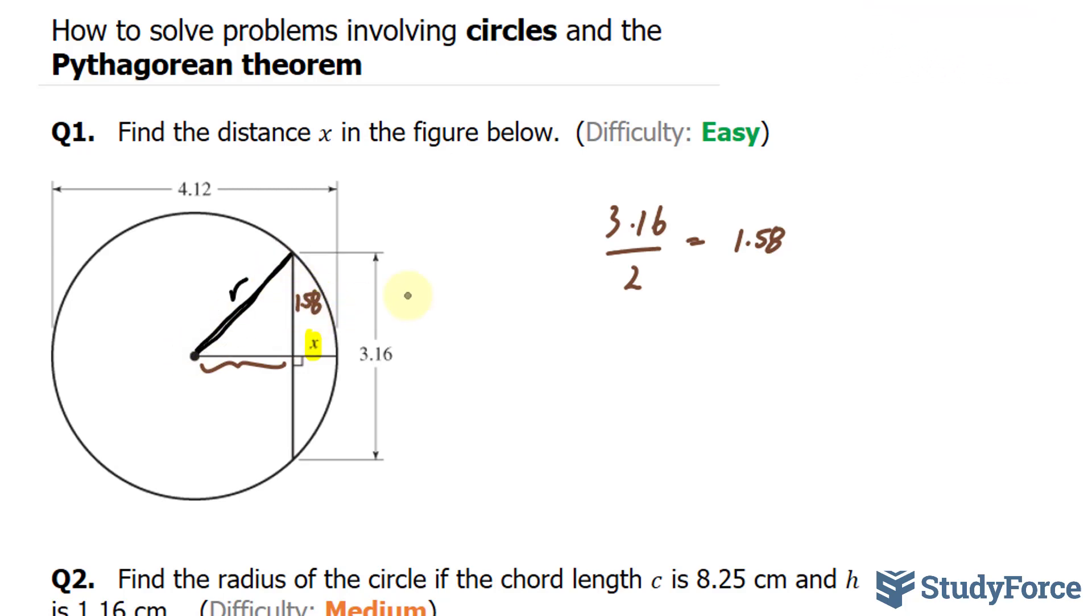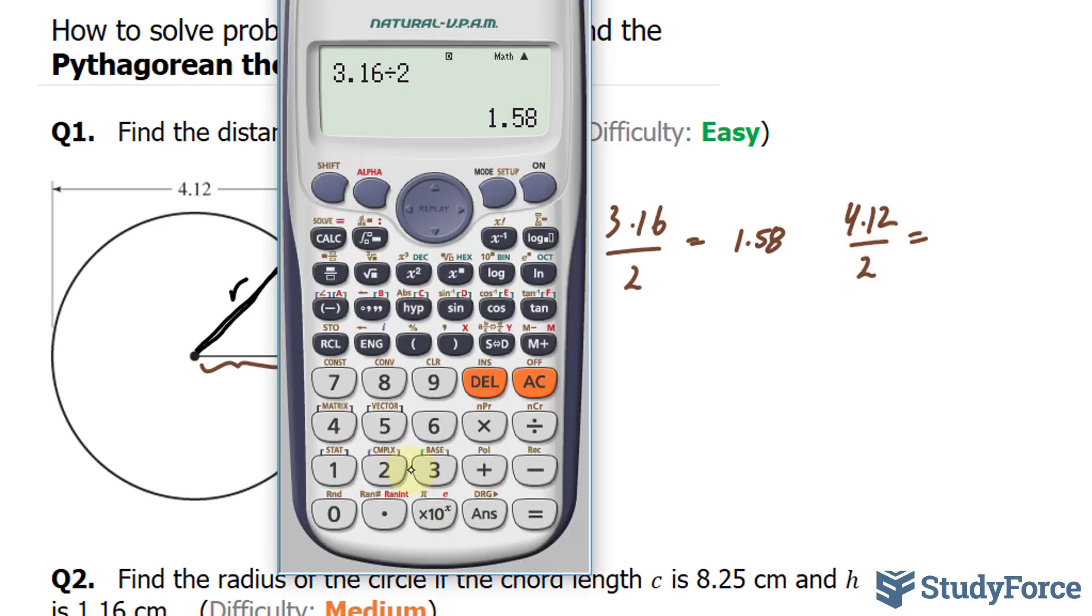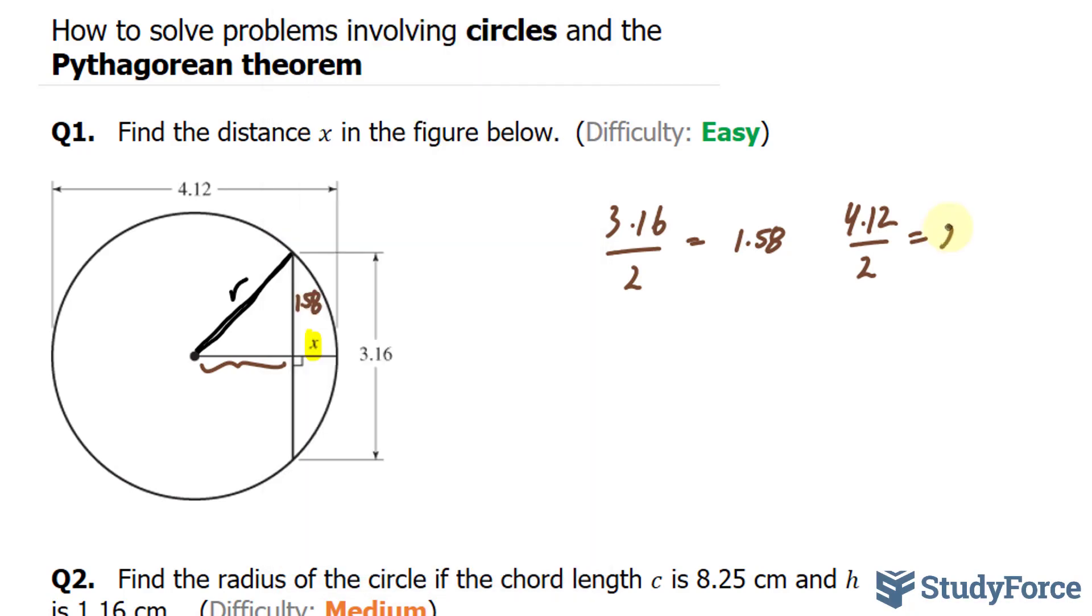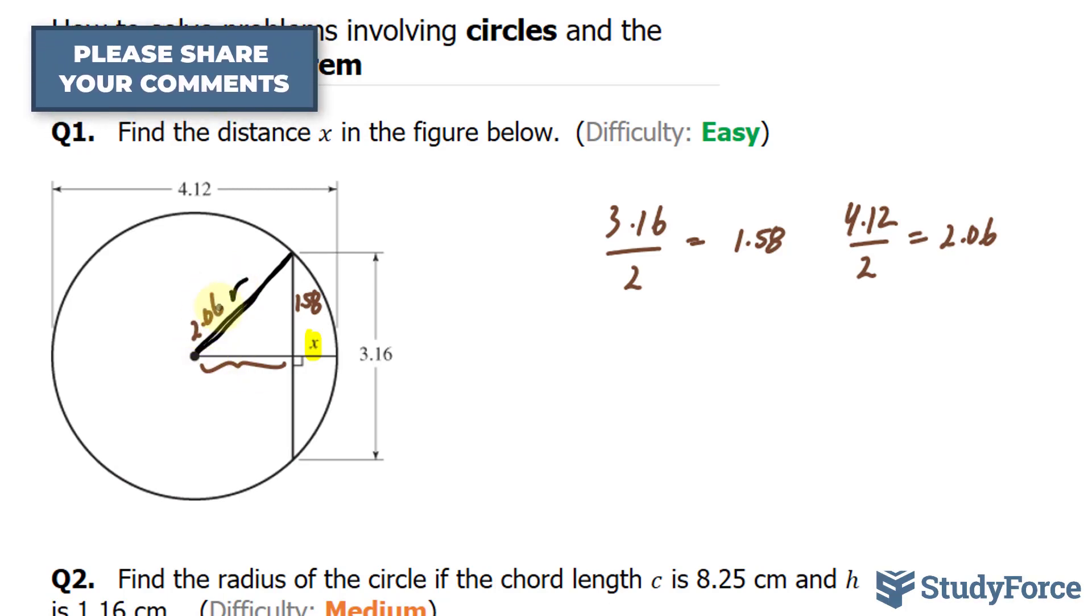To find the radius, I'll take 4.12 and divide that by 2. Using our calculator, 4.12 divided by 2, and we get 2.06. So we just found out what r is, it's 2.06.